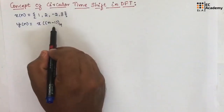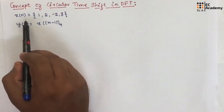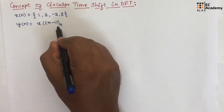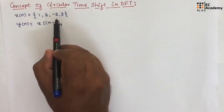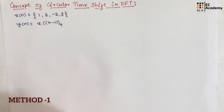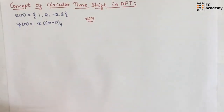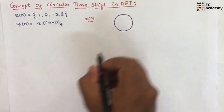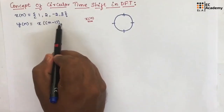So, this is a circular shift by 1 position. Here mod 4 represents the number of elements in the sequence x of n, and since the number of elements is 4, that is why it is mod 4. First let us represent x of n by a unit circle, dividing this unit circle into 4 parts because the length of the sequence is 4.